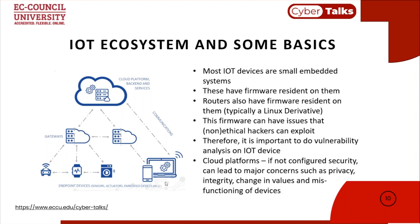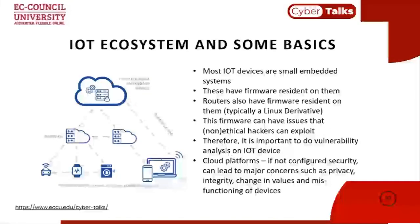Once you understand the three elements, it becomes easier to plan how to secure all of them. Securing just the IoT device won't solve the problem; securing just gateways won't solve it; securing just the cloud platform won't solve it either. You must look at it holistically — all three components and the communication medium between them must be secured. IoT devices are small embedded systems with firmware; gateways and routers also run firmware, typically Linux, and may have vulnerabilities. Vulnerability analysis on IoT devices is therefore important. A cloud platform that is misconfigured will also give you serious issues.